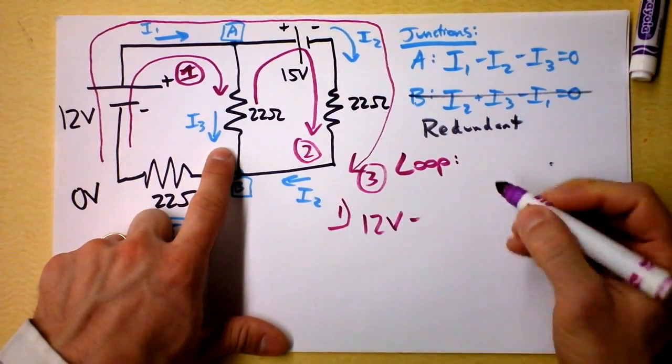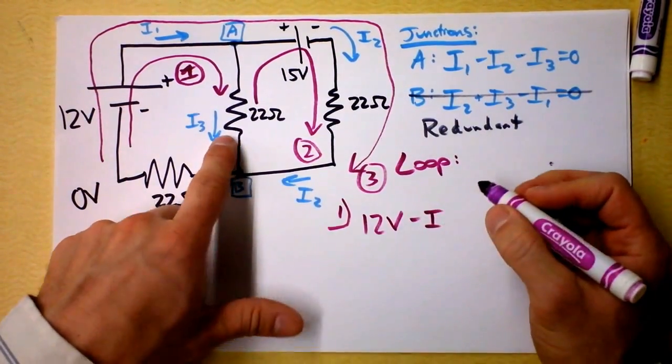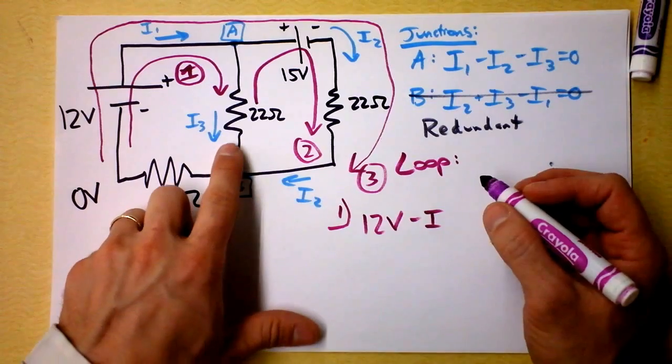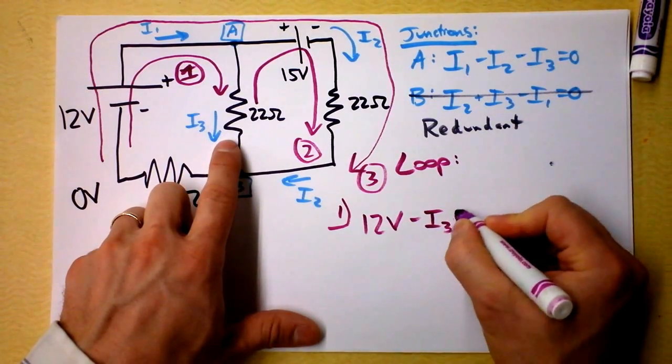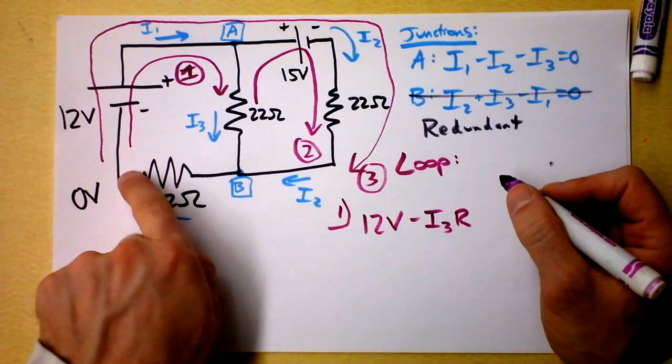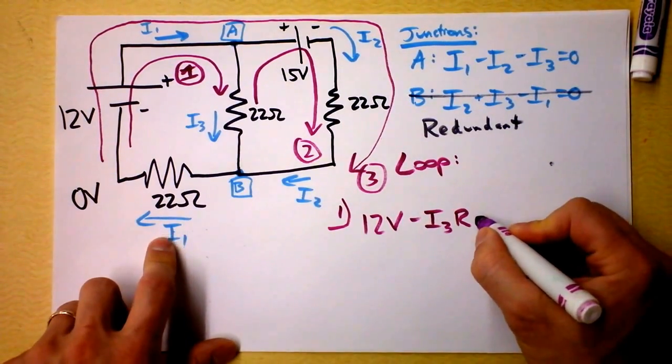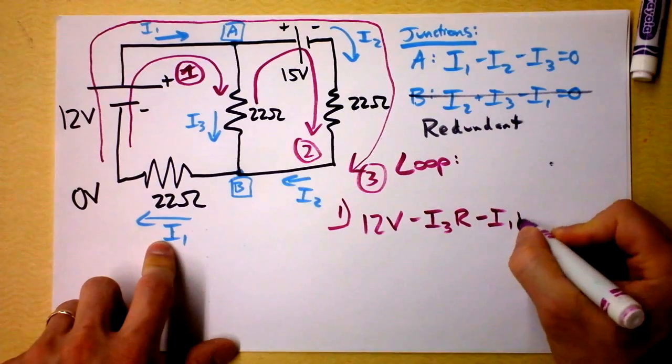But assuming I'm going that direction, my voltage will drop. So I have to subtract the voltage drop on this resistor, which is, oh, I'm just going to call them R because they're all the same. We can plug in for that later. It's going to be I3 times R. And then as I continue this direction, I'm going through this resistor in the direction of the current. So I'm dropping my voltage again. And that's going to be I1 times R.